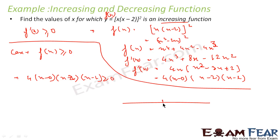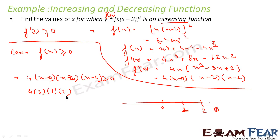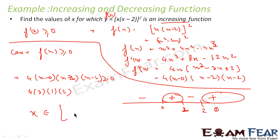On the number line, the breakpoints are 0, 1, and 2. Testing x=3: 4(3)(3-2)(3-1) = 4×3×1×2, which is positive. So the rightmost region is positive, and the signs alternate: positive beyond 2, negative between 1 and 2, positive between 0 and 1, negative below 0. I am interested in the positive ranges, which are [0,1] and [2,∞).